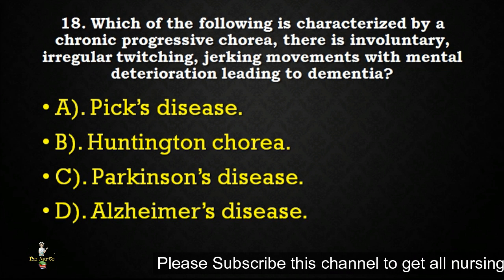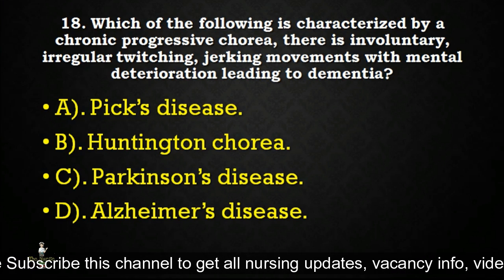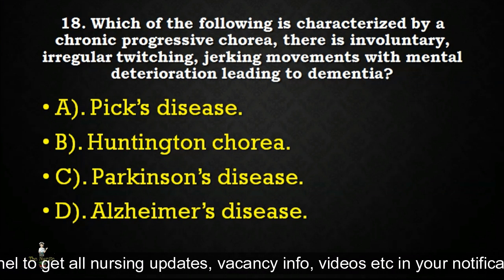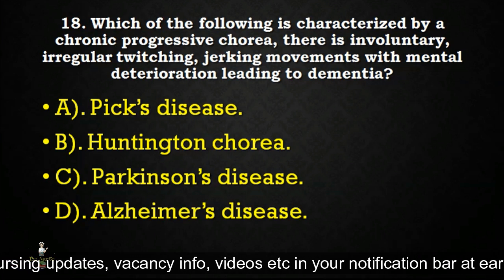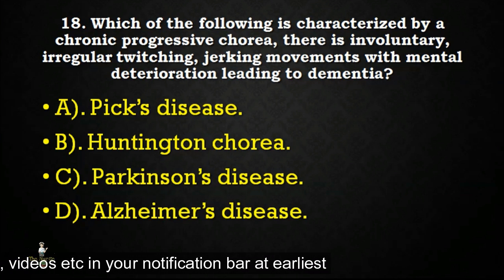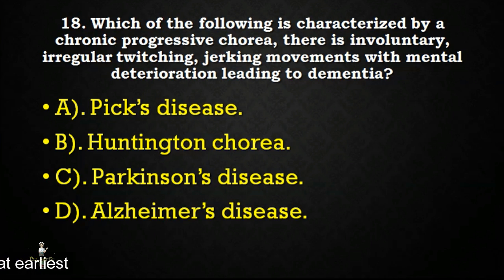Next question: which of the following is characterized by a chronic progressive chorea — involuntary, irregular twitching and jerky movements — with mental deterioration leading to dementia? Options: Pick's disease, Huntington's chorea, Parkinson's disease, or Alzheimer's disease? Correct answer is Huntington's chorea.